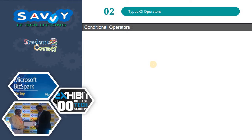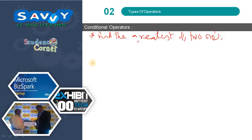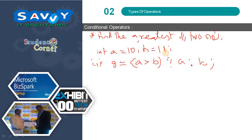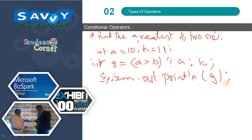First example: find the greatest of two numbers. I will only explain the logic part. The variable g holds the greatest value among a and b. We check if a is greater than b — if true, a is assigned to g; otherwise, b is assigned. For example, if int a equals 10 and b equals 11, then g is assigned b and it prints the greatest value.